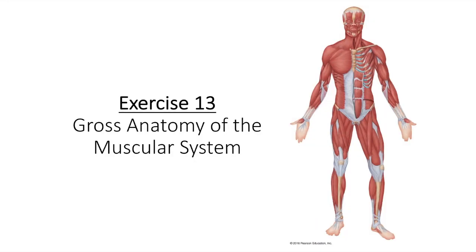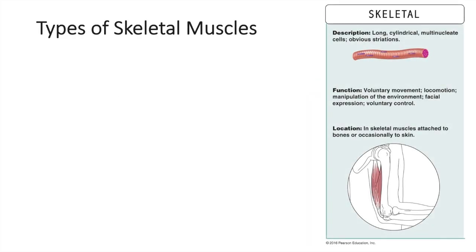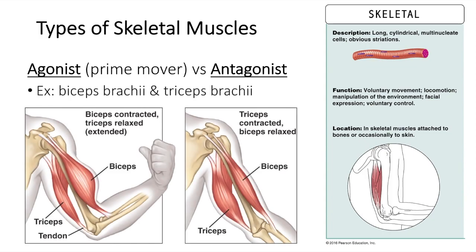In exercise 13, we'll be studying the gross anatomy of the muscular system. Skeletal muscles enable movement, and most often movements require the coordinated action of several skeletal muscles working together. Muscles that are most responsible for producing a particular movement are called prime movers, or agonists. Muscles that oppose or reverse a movement are called antagonists. When a prime mover is active, the fibers of the antagonist are stretched and in the relaxed state. Antagonists can be prime movers in their own right — for example, the biceps muscle of the arm, a prime mover of flexion at the elbow, is antagonized by the triceps, a prime mover of extension at the elbow.